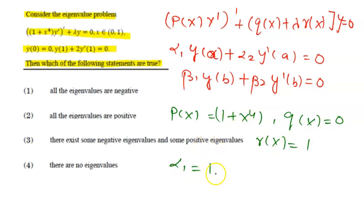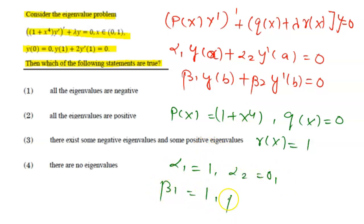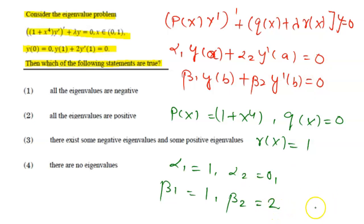By comparison: α₁ equals 1, α₂ equals 0, β₁ equals 1, and β₂ equals 2. We have completed the comparison of boundary conditions, with a equals 0 and b equals 1.